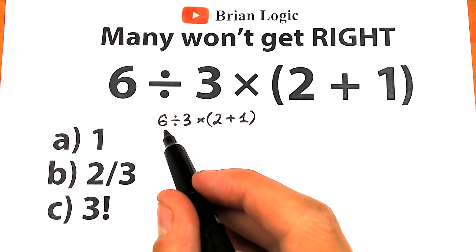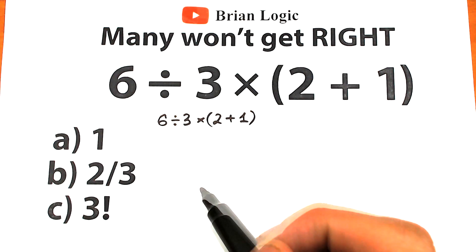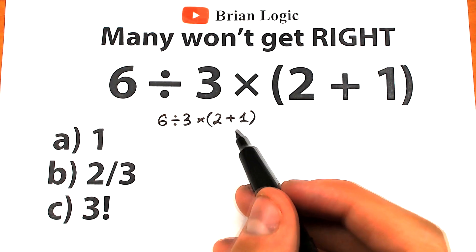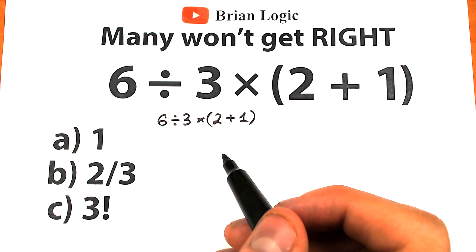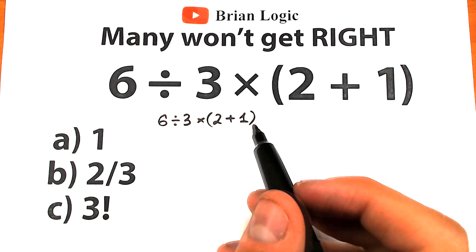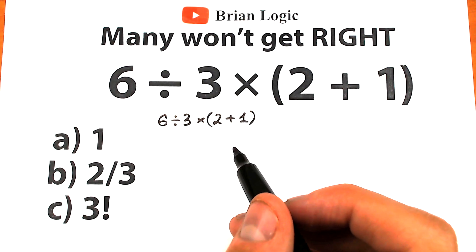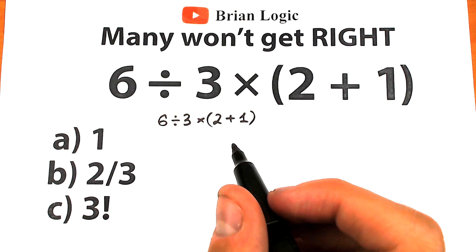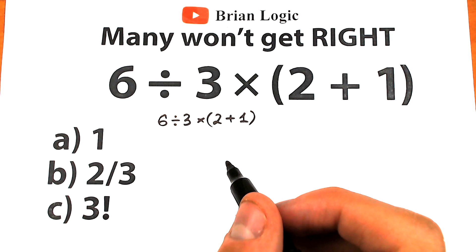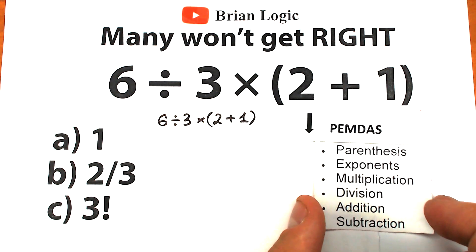Right here we have division, we have multiplication, and we have addition. What should we do first? Division, multiplication, addition — and it turns into a big argument. A lot of students are confused about what to do first, because whatever order of operation we select is going to create a different answer. So we need to understand the correct order. Let's look at the PEMDAS order of operations.